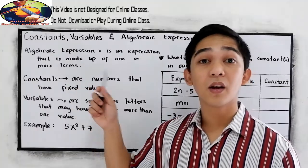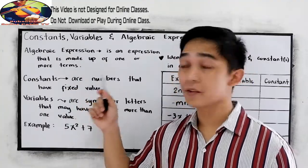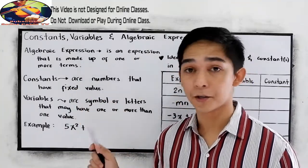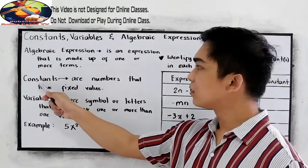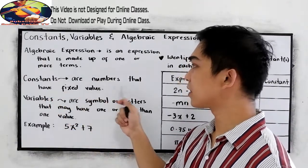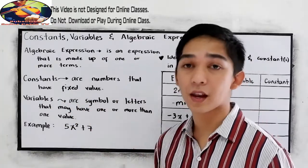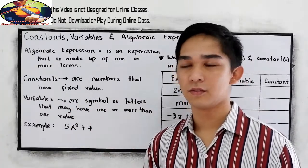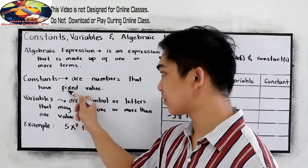So let's have examples on algebraic expressions later. Next is constant or constants. These are numbers that have fixed value.